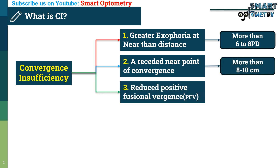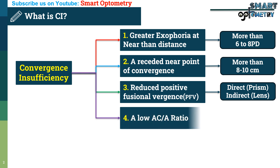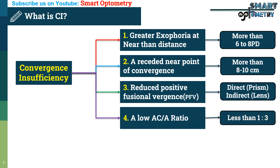3. Reduced positive fusional vergence — both direct PFV performed by base-out prism and indirect PFV performed by plus lens. 4. A low AC/A ratio, less than 1 to 3.